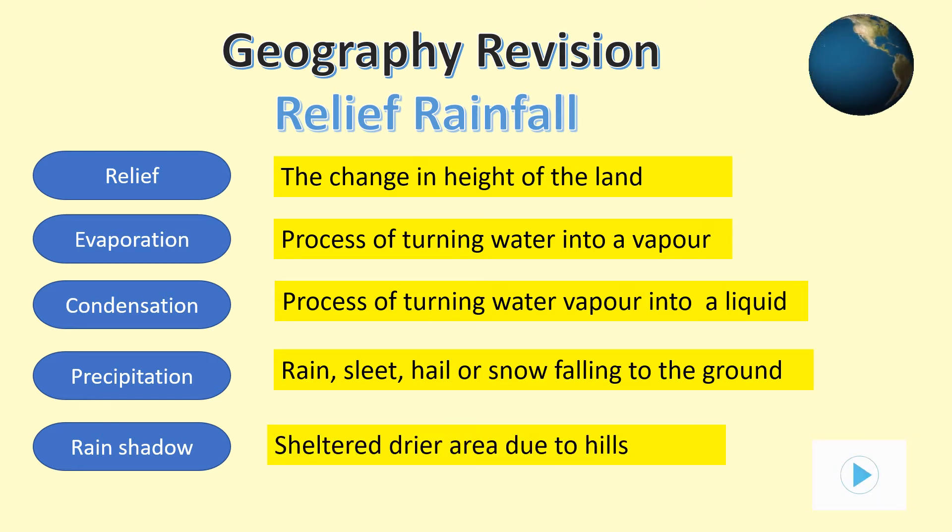The last unusual term is rain shadow. This refers to a region that has much less rainfall because it's on the leeward sheltered side of a range of hills and mountains, as we'll see in the presentation. Pause the show before moving on if you're unsure of any of these key terms.